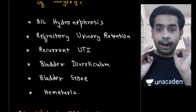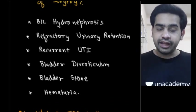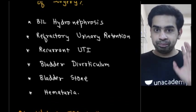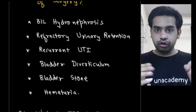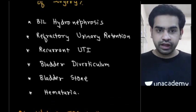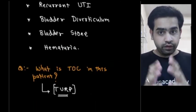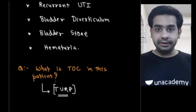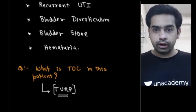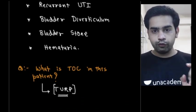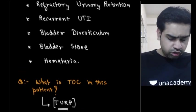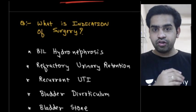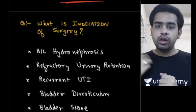If the patient develops hematuria or any of the above indications, the treatment of choice is TURP — transurethral resection of the prostate. TURP remains the preferred surgical option for BPH. That is all about the BPH evaluation and treatment.